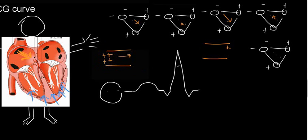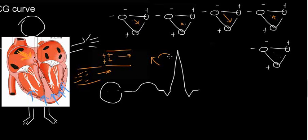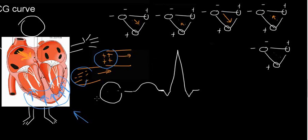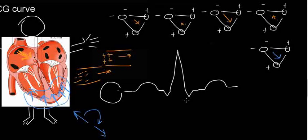Because negative charges have the opposite polarity as positive charges, instead of having a vector pointing in that direction, we just flip it 180 degrees. The repolarizing wave is essentially going that way, but because it's negative charges moving — not positive charges — we flip it over and get a positive direction for repolarization. So this is going to be a positive upstroke. And this is a heartbeat, very simplified.